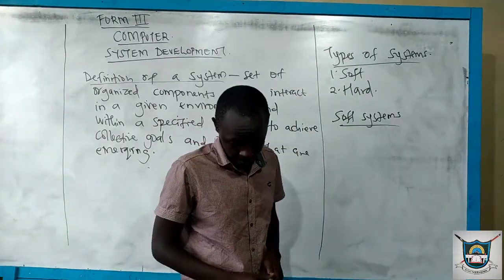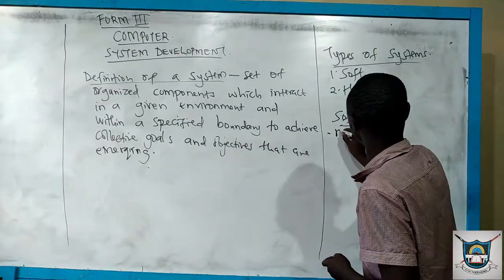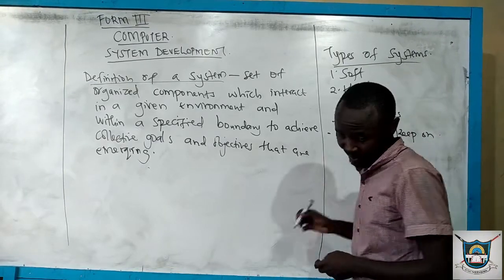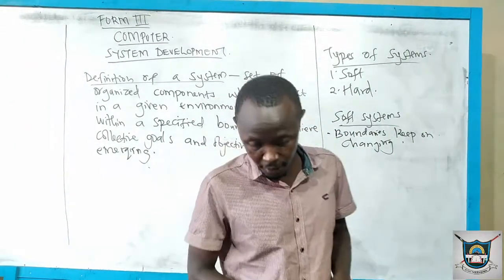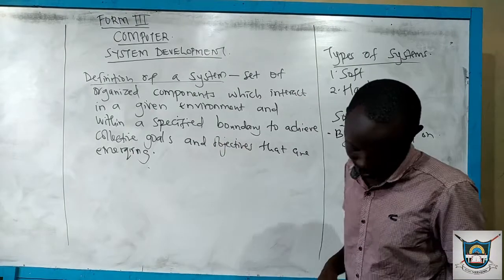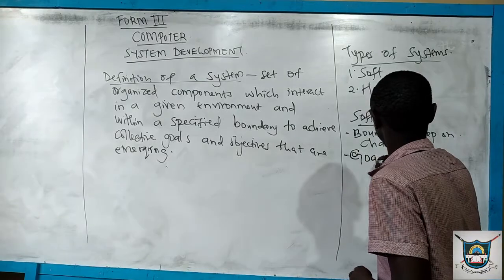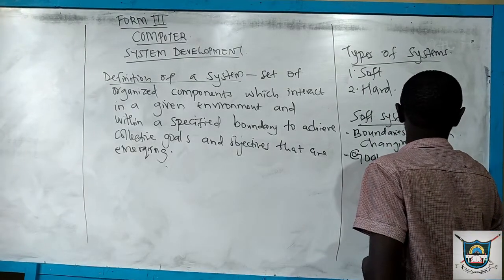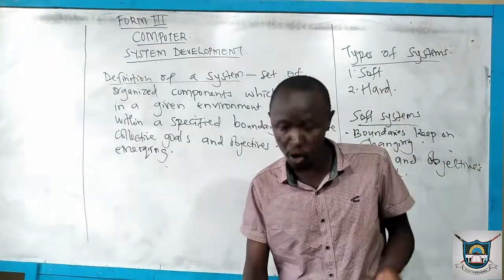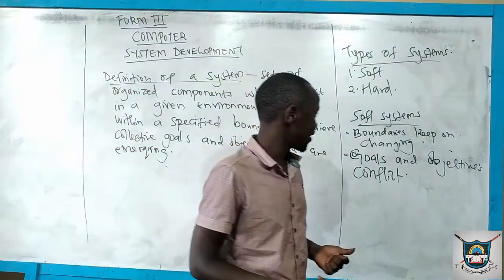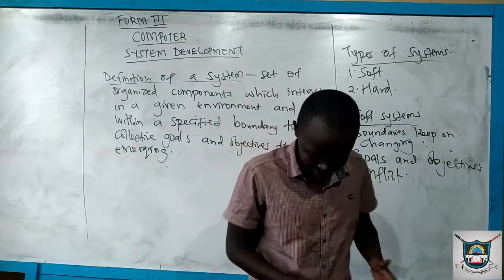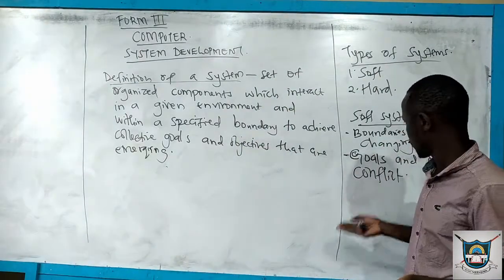One reason why it is called a soft system is because the boundaries keep on changing. The goals and objectives usually conflict — they are not clearly defined. For example, with a political system, you might not be able to predict who will be the next president or who will be the next governor. So this is a system where it is difficult to tell the outcome.